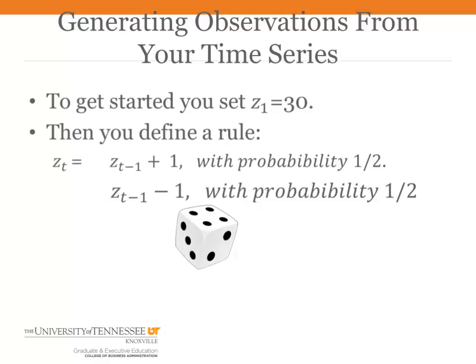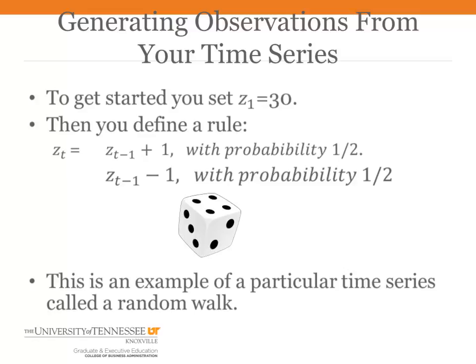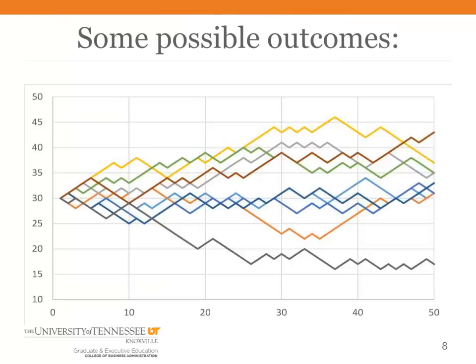For example, if week 2 turns out to be 31, then week 3 will be either 32 or 30. This type of time series is called a random walk. Usually with a random walk, the week-to-week change has a normal distribution, but to simplify this example, we have made it plus or minus 1. Here are 10 examples of possible outcomes over 50 weeks. We call each of these 10 sets of 50 numbers an observation of the time series, or the data for the time series. In the real world, you would have observed one of these and would have to work with that. Some of these observations trend upward, some trend downward, and some more or less end up where they started.